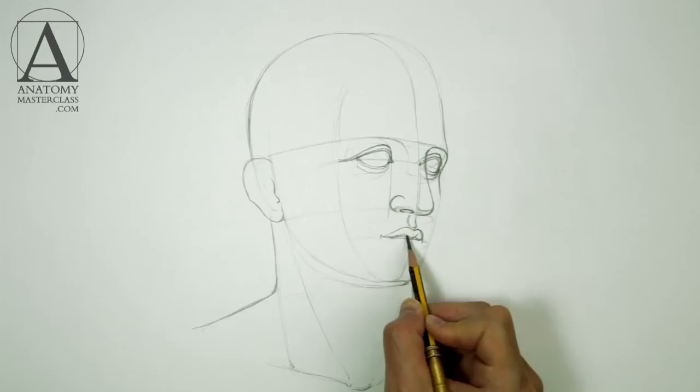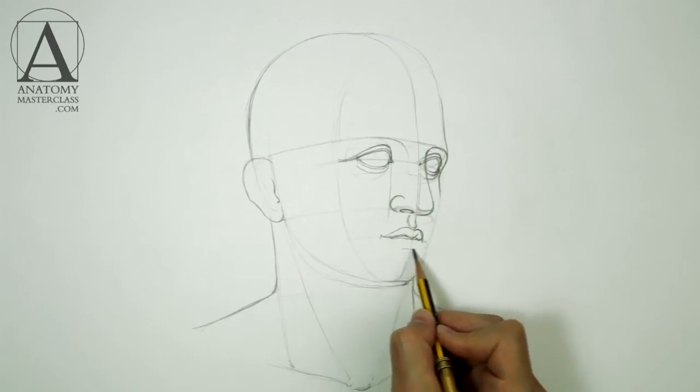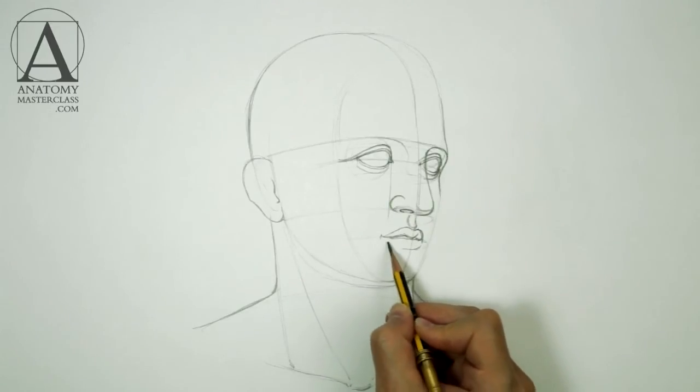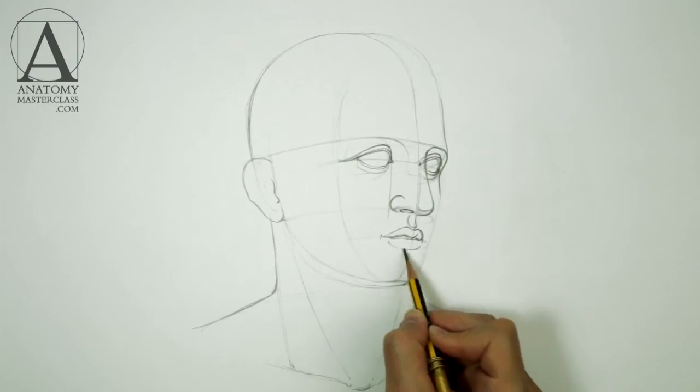The lower lip of the mouth is shorter than the upper one. It also has a different shape and not a mirror reflection of the upper lip.